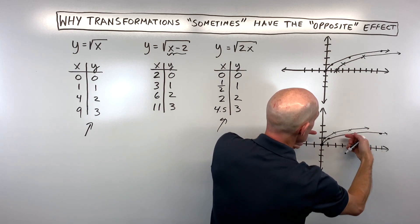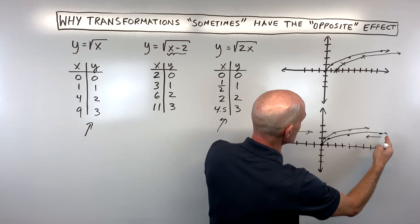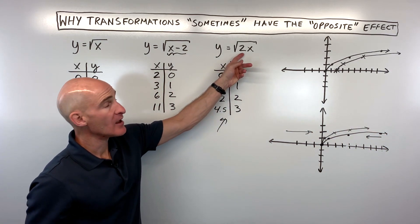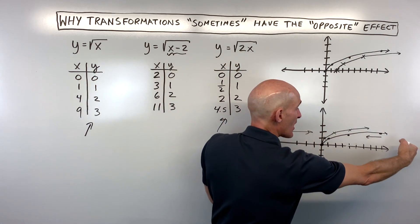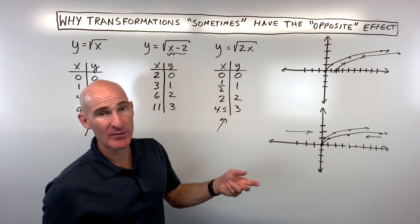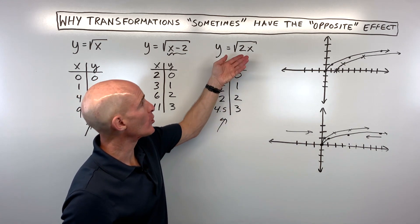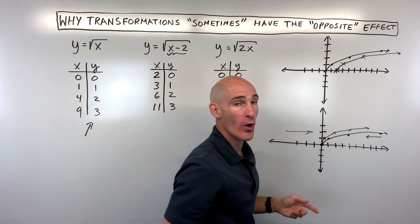You can see here, it's like we're squeezing on this parent function in the horizontal direction. So this is actually a horizontal shrink of 1/2, not 2. You would think 2 would be a horizontal stretch by a factor of 2, but it's actually the opposite. What I mean by the opposite is: instead of multiplying by 2, you're dividing by 2, or multiplying by the reciprocal—a horizontal shrink of 1/2.